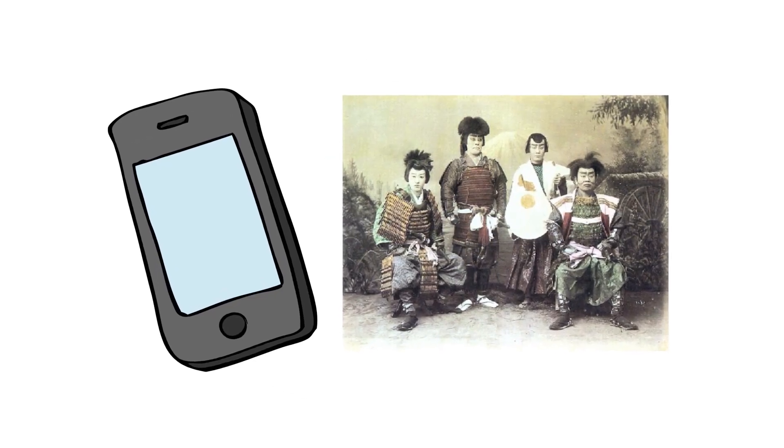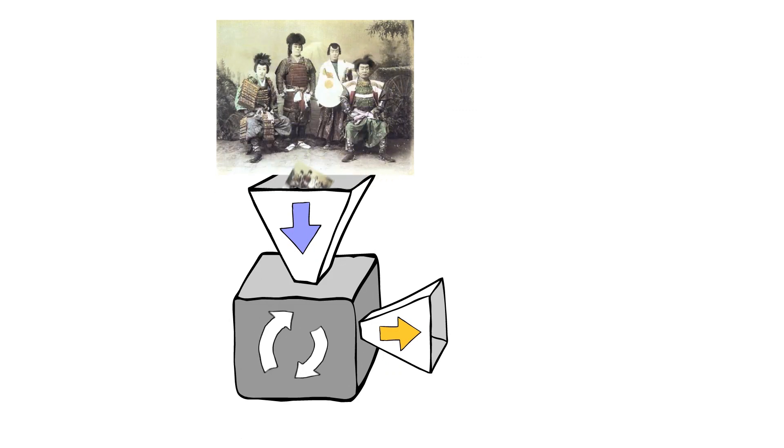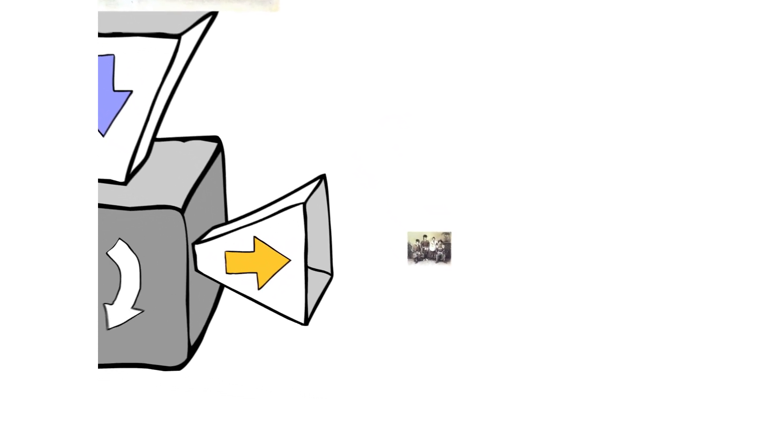The reason you can carry around tons of photos on your phone is compression. Compression allows computers to take a photo or music or video file and make it smaller without reducing the quality. But how small can a file actually get? Turns out, it's impossible to know.